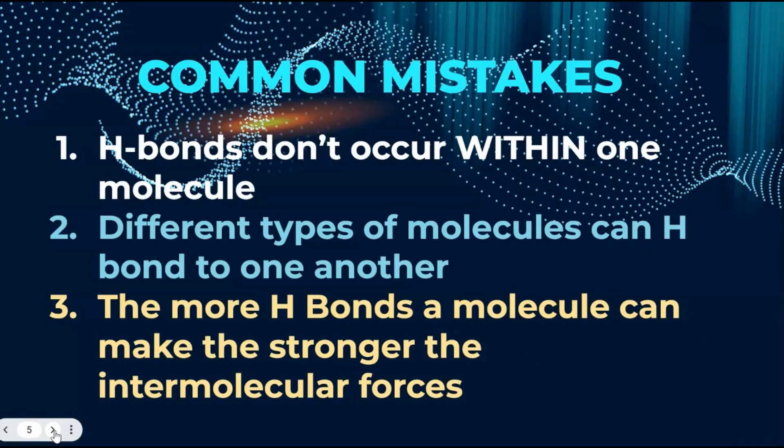Here are the three common mistakes you're going to look out for. Number one, don't ever think a hydrogen bond occurs within a single molecule. These bonds occur between separate molecules. Mistake number two, different types of molecules can hydrogen bond to one another. I know a lot of times we see a bunch of water molecules as the quintessential example of hydrogen bonding. That's not always the case. Mistake number three, the more H bonds a molecule can make, the stronger the intermolecular forces. So four H bonds is definitely stronger than three or two or one and of course this will affect physical properties.